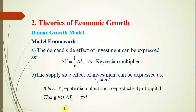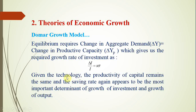Taking changes, we derive: change in potential output equals sigma times change in capital (change in K), since change in K equals investment I. Equilibrium requires that the change in aggregate demand (change in Y) equals the change in productive capacity (change in Yp), which gives us the required growth of investment: change in I divided by I equals s times sigma. Given the technology, the productivity of capital remains constant, and the saving ratio again appears as the most important determinant of the investment rate and the growth rate of output.